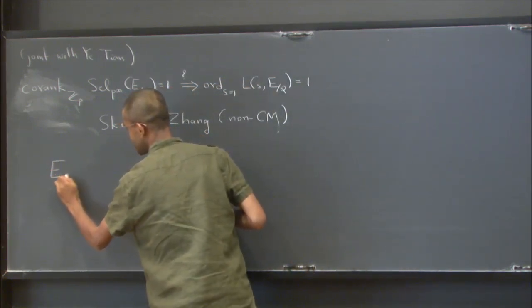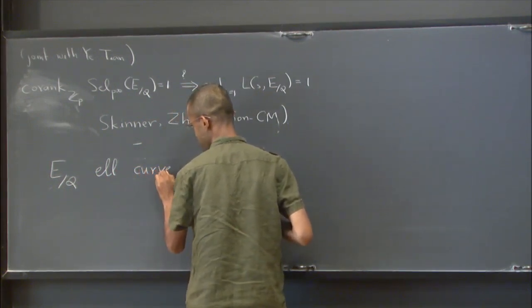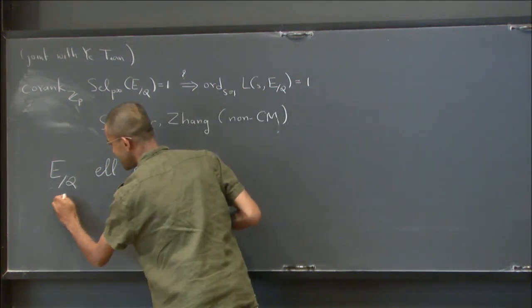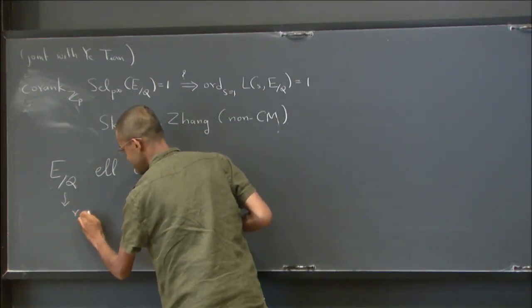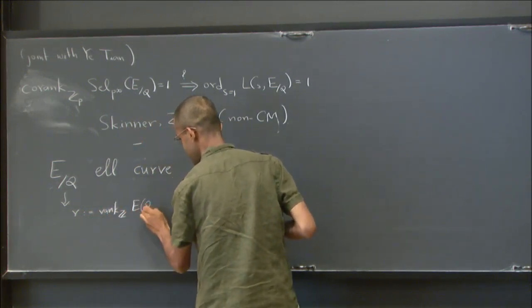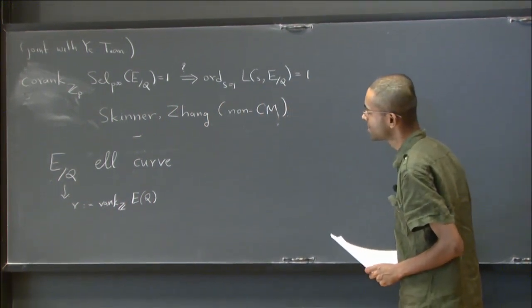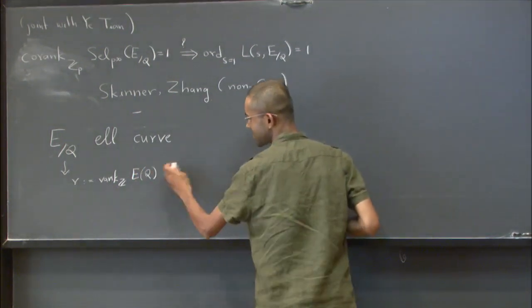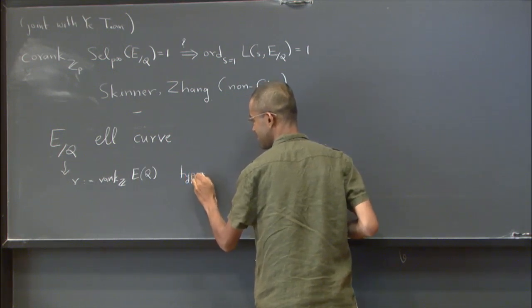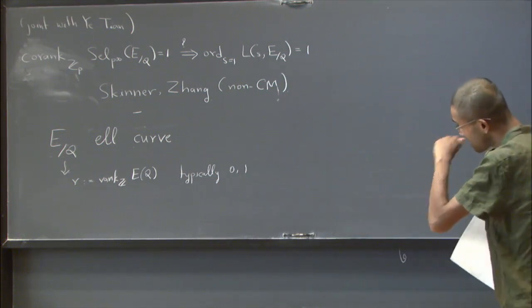So now let's just start with an elliptic curve over Q. So maybe some of the key invariants associated to it are its arithmetic rank. So just rational points, it's a finitely generated Abelian group, and so we typically maybe expect this to be 1 or 0.